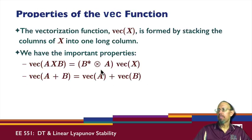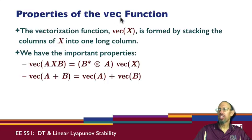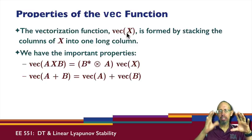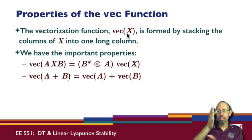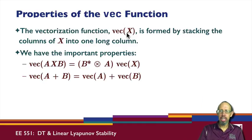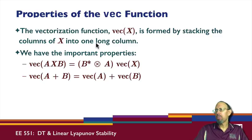The most valuable property of the Kronecker product arises when it comes in contact with the VEC function. The vectorization function VEC of X takes a matrix, extracts its columns one by one, and stacks them on top of each other, so that you end up with a single column vector out of a matrix.